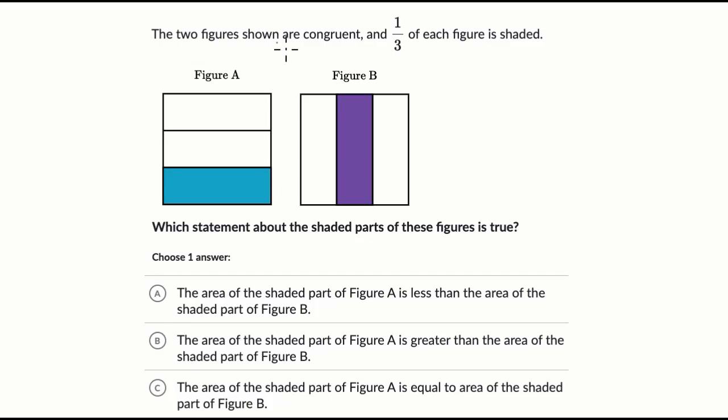We are told the two figures shown are congruent, and one-third of each figure is shaded. Which statement about the shaded parts of these figures is true? So why don't you read these and figure out which of these is true.